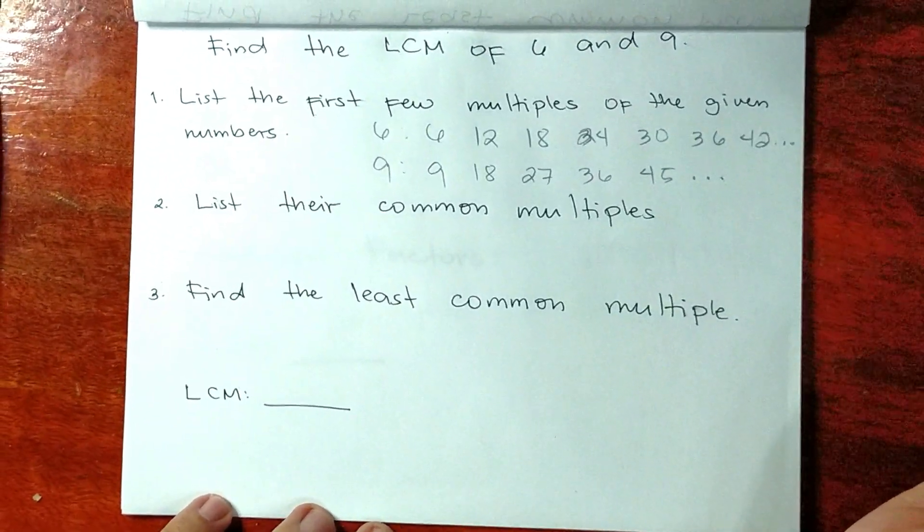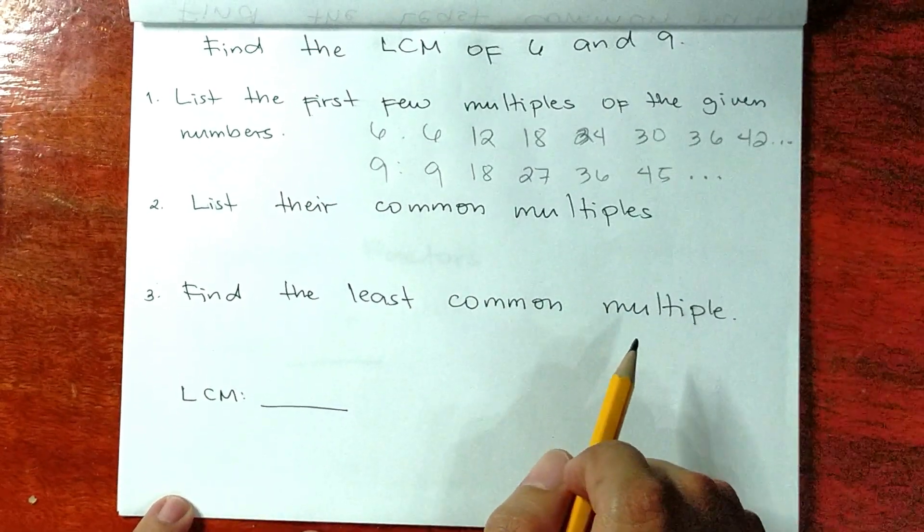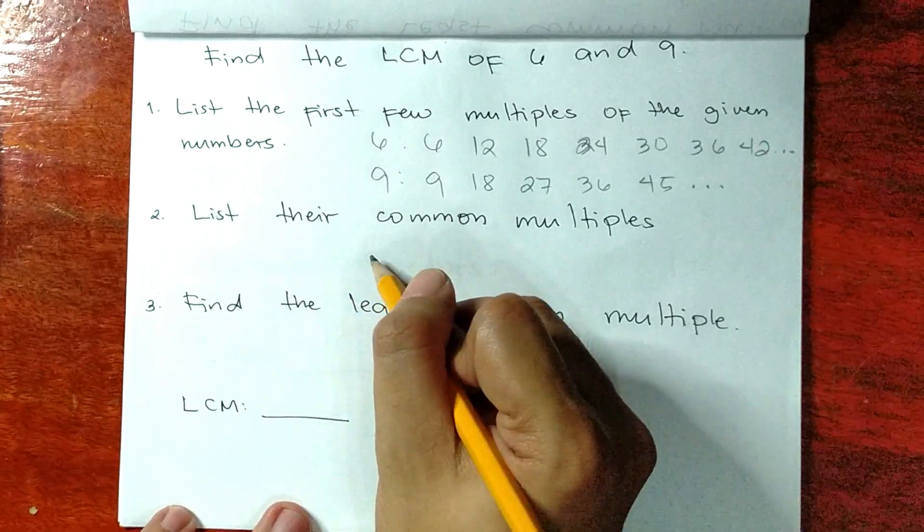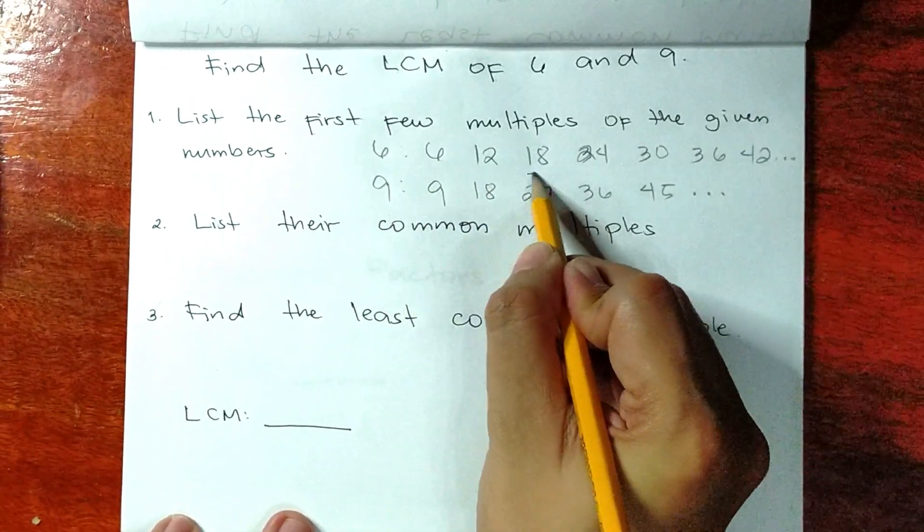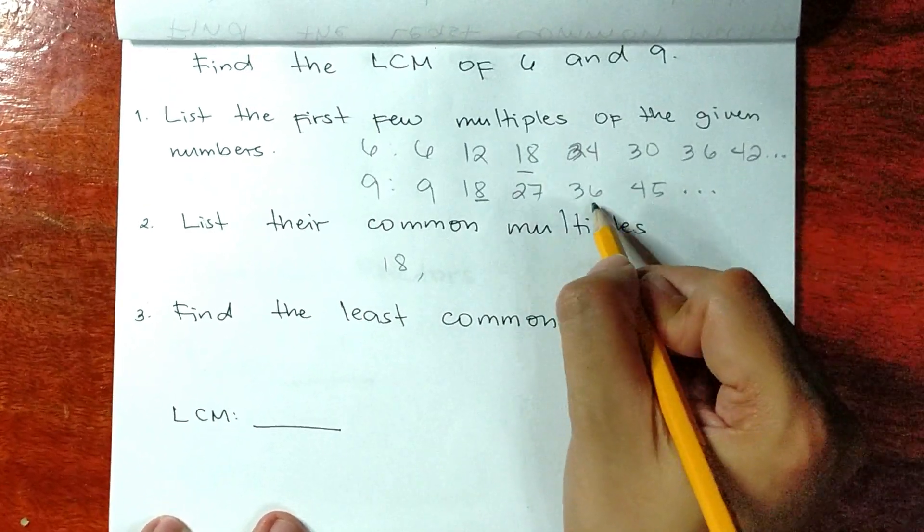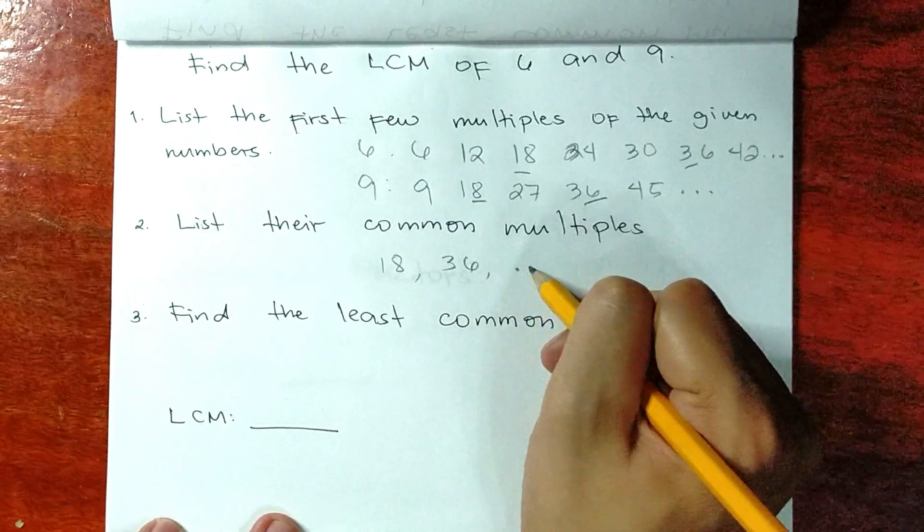Second step is to list down their common multiples. The common multiples of 6 and 9 are 18 and 36, and possibly there's more.